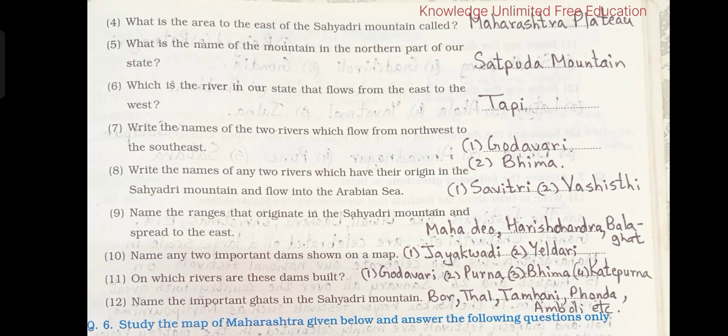6. Which is the river in our state that flows from the east to the west? Tapi. 7. Write the names of the two rivers which flow from north-west to the south-east. Godavari and Bhima.